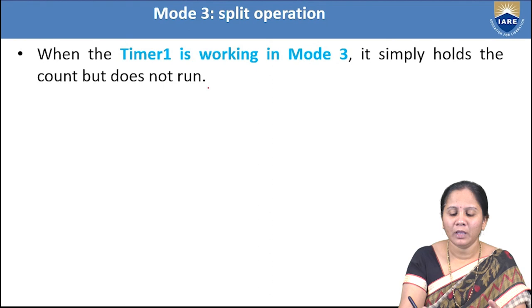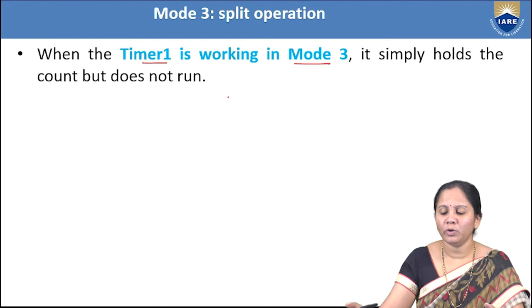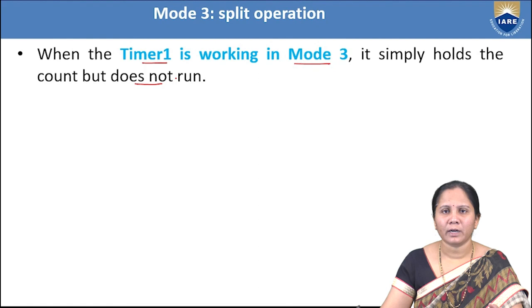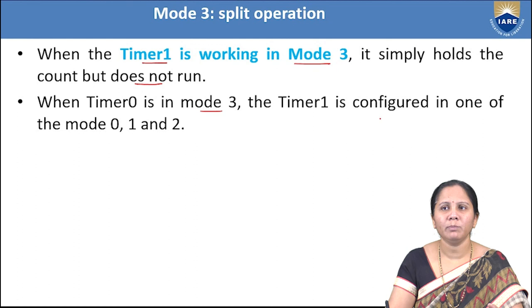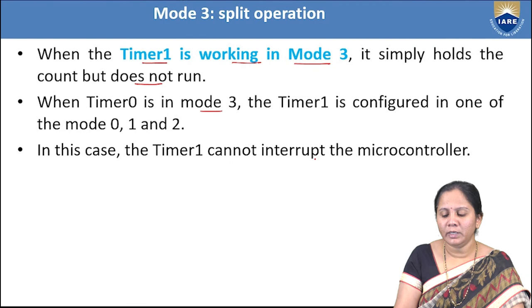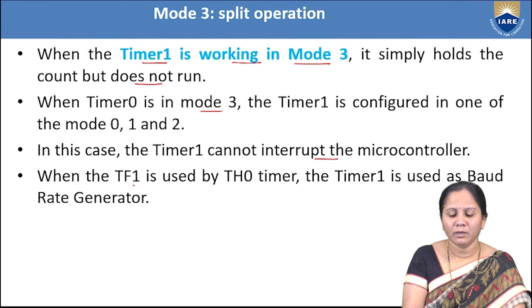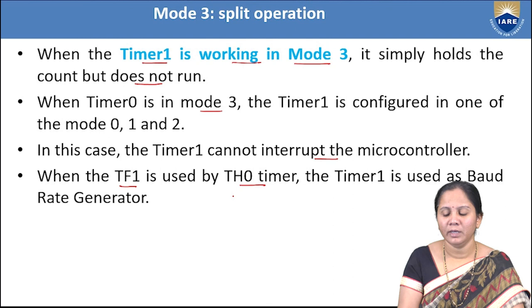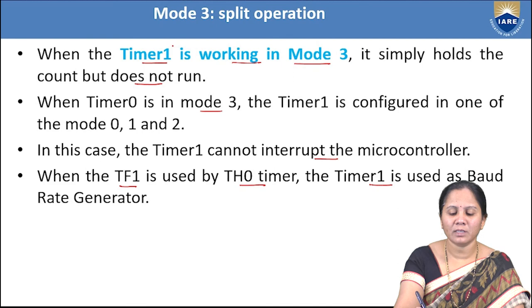When Timer 0 is in mode 3, Timer 1 can be configured in mode 0, mode 1, or mode 2. When Timer 1 is working in mode 3, it simply holds the count value but does not run, and it cannot interrupt the microcontroller. When TF1 is used by the TH0 timer, Timer 1 is typically used as a baud rate generator.